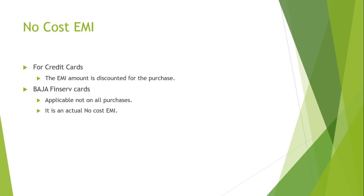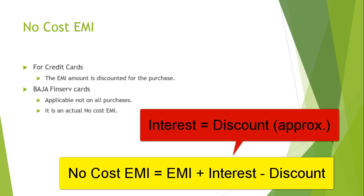When it comes to credit cards, the way it works is: for a 60,000 item, suppose the interest amount is 1,000 or 2,000 rupees over 12 months. Instead of you paying that extra amount, the product seller gives it to you as a discount. So a 60,000 rupee item is effectively bought at 58,000 rupees, and you end up paying 60,000 including the interest — so effectively you are not paying any interest. That is how no cost EMI works on credit cards.